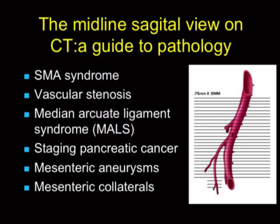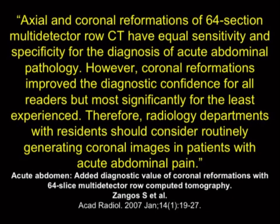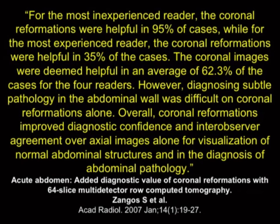This midline sagittal view is critical — you need to look at it whether it's SMA syndrome, vascular stenosis, median arcuate ligament syndrome, or staging malignancies. Unless you look at the sagittal views, you're going to miss or misstage pancreatic cancer. For mesenteric aneurysms and mesenteric collaterals, 3D mapping is critical. There's an article by Zengos on the importance of coronals in acute abdomen — particularly important for less experienced readers. But even with a lot of experience, you will still miss things unless you're routinely looking at the coronals and sagittals — and I mean every single case, not just when you have a question.